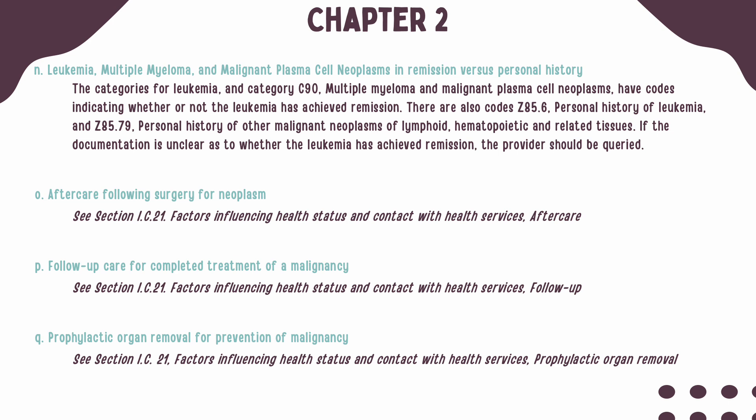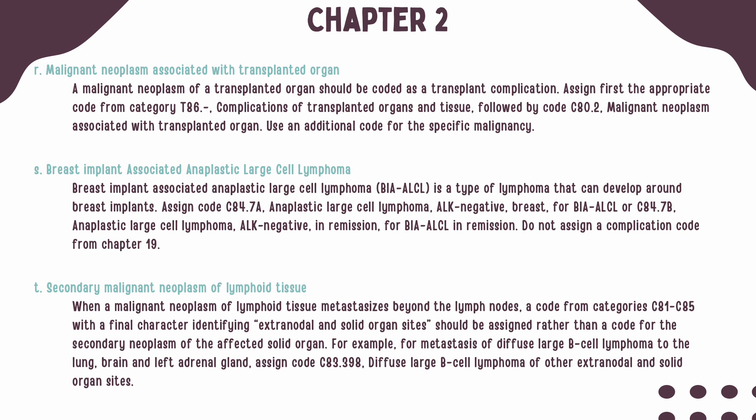For aftercare, follow-up care, or prophylactic organ removal for malignancies, see Chapter 21 guidelines for instructions. If a malignant neoplasm is present on a transplanted organ, it should be coded as a complication of the transplant. A total of three codes should be used: first, a code from category T86 should be listed, followed by C80.2, and then a code for the specific malignancy that is present. When a breast implant is associated with anaplastic large cell lymphoma, also referred to as BIA-ALCL, you should assign either C84.7a or C84.7b based on whether remission has been achieved. A code from Chapter 19 for complications should not be assigned.